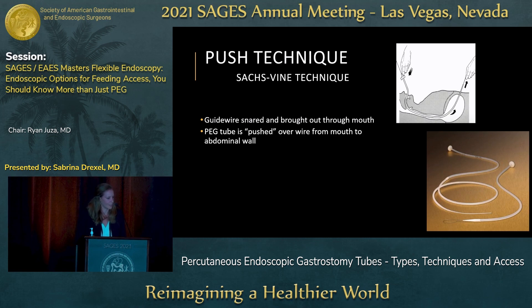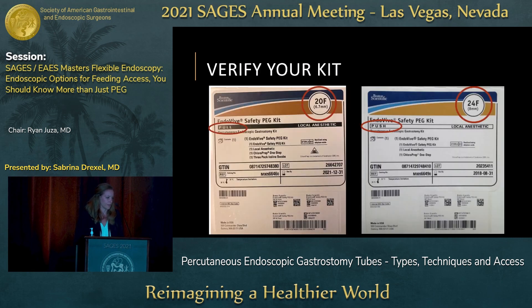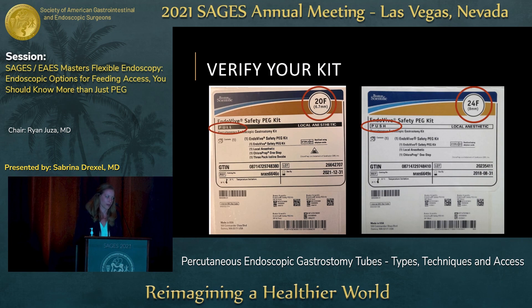The next type is the push technique, which is very similar to the pull technique but the tubes differ. Instead of having a self-dilating tube, you have a tube with a dilator that disconnects, and instead of pulling from the abdominal wall side, you push from the mouth side, pushing the tube over the wire until it's at the desired location. It's important to know what type of technique you want to do — it will say on the outside of your kit whether you have a pull kit versus a push kit. The tube size is easy to see on the outside of the kit, but things like the type of bumper or right-angle versus standard tube are harder to see on the packaging, so you may need to talk to your supply manager to confirm.